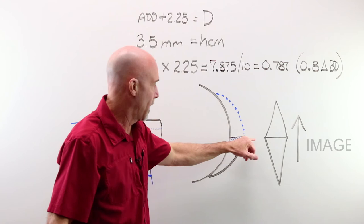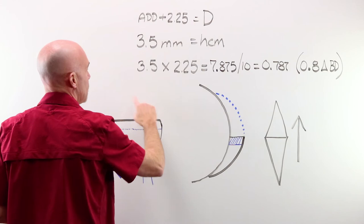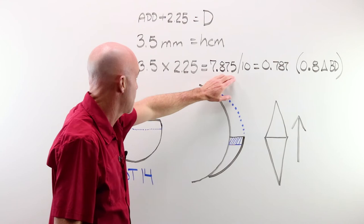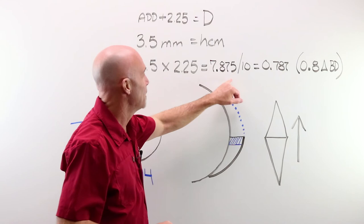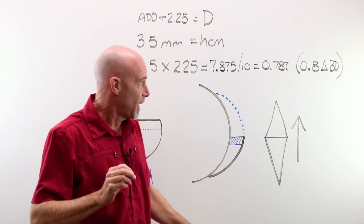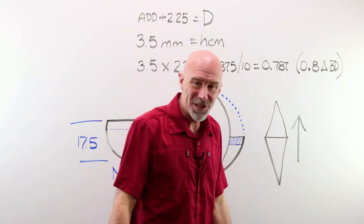So your answers to your image jump problems are always going to be a base-down answer. That's why. So we took our HCM 3.5, we multiplied it times our D of 2.25, we end up with 7.87, we divide by 10 to convert our centimeters to millimeters, we end up at 0.787, rounded to 0.8 diopters base-down for our image jump. That is how it would work through a complete image jump formula.